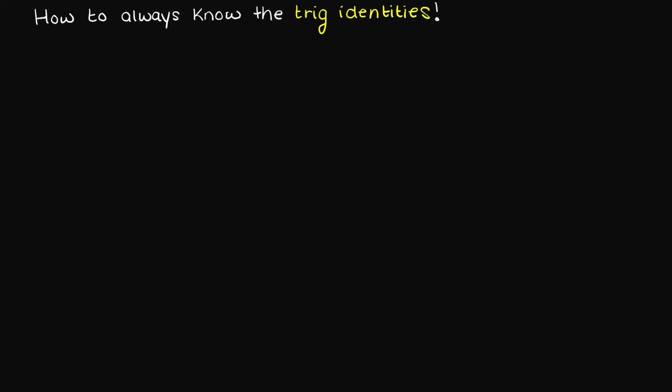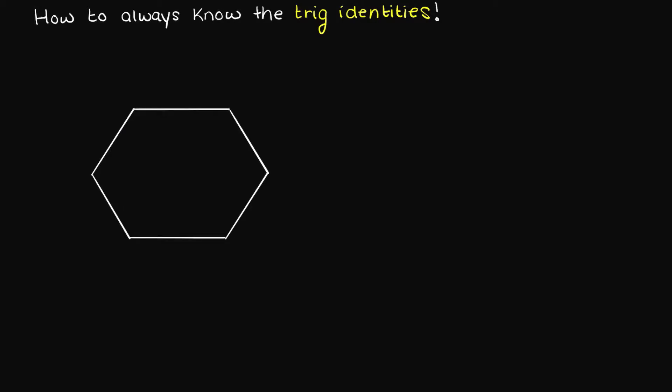Let's begin by drawing a hexagon, so we should have six specific points. Now let's write the abbreviated versions of our trig functions — we have tan for tangent, sine, and cosine, always moving clockwise.